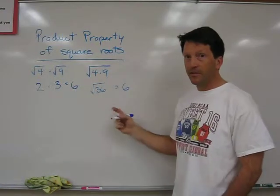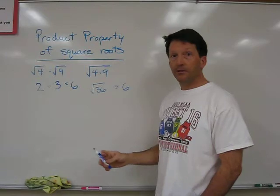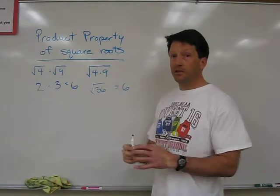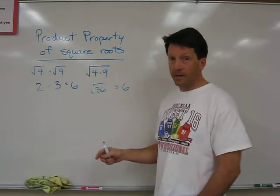So you can see that this works, because either way you get an answer of 6. So you can think of the numbers together under the same radical sign, or you can separate those into two separate square roots that are multiplied together.